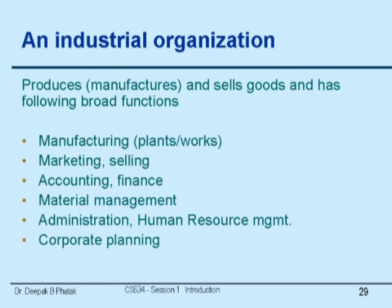Which are these? Manufacturing, which happens in plants or works, marketing, selling, then accounting and finance when you collect money, material management because when you are manufacturing something you are purchasing raw material from some other people and you have to manage the inventory of raw material and finished goods. Then administration, human resource management — you employ people, you have to reskill them.